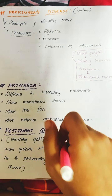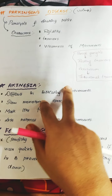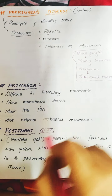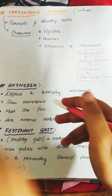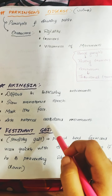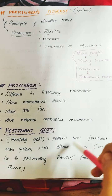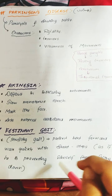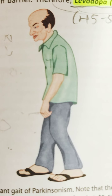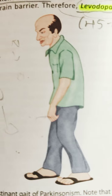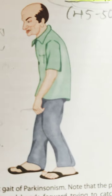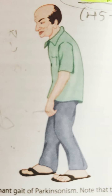Festinating gait is another feature of Parkinson's disease — the patient cannot walk properly, walking like a drunk person. The patient bends forward and walks quickly with short shuffling steps as if trying to prevent themselves from falling. This is called festinating gait, characterized by the patient bent forward, looking downward, taking rapid short steps.